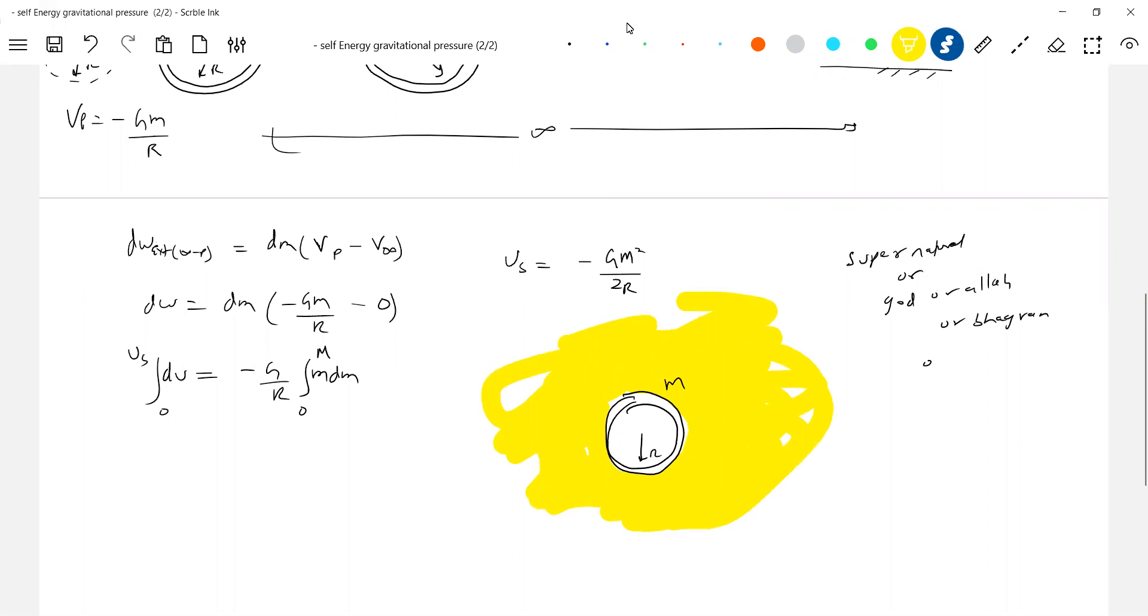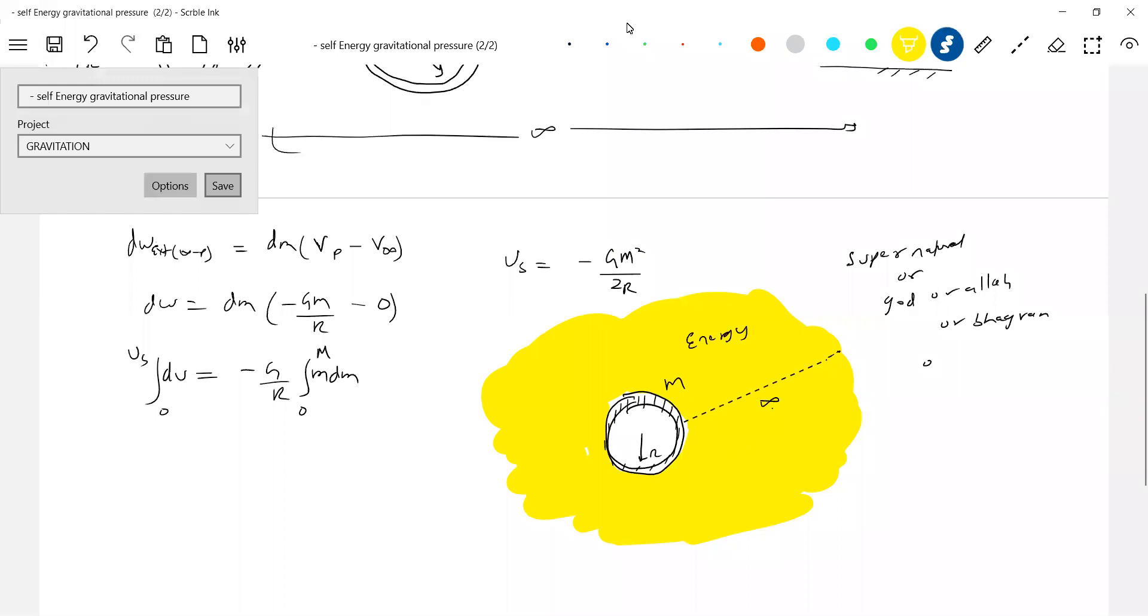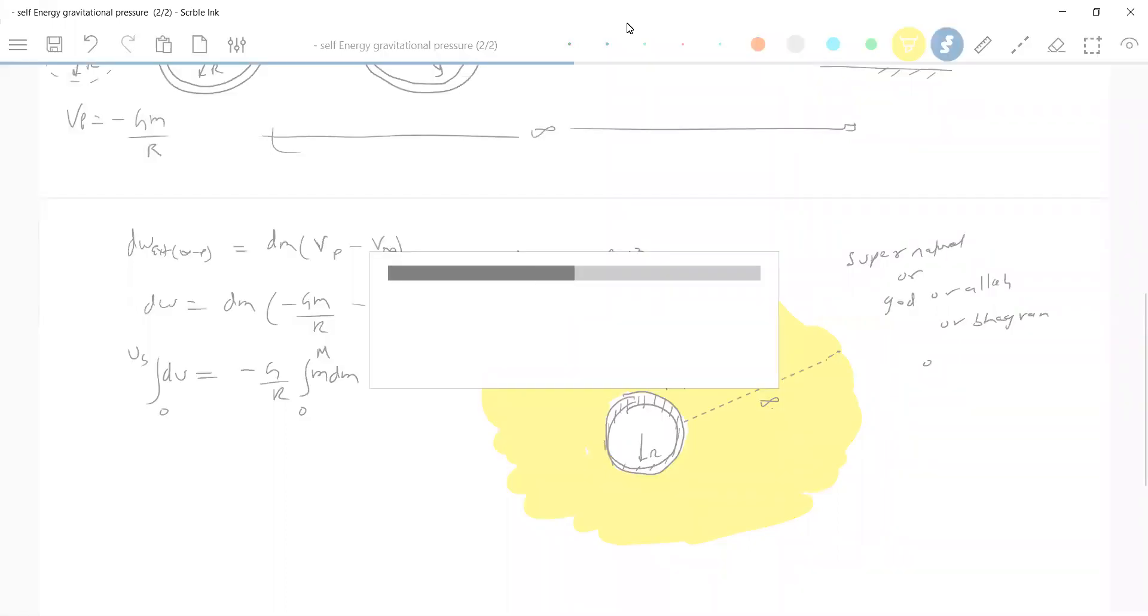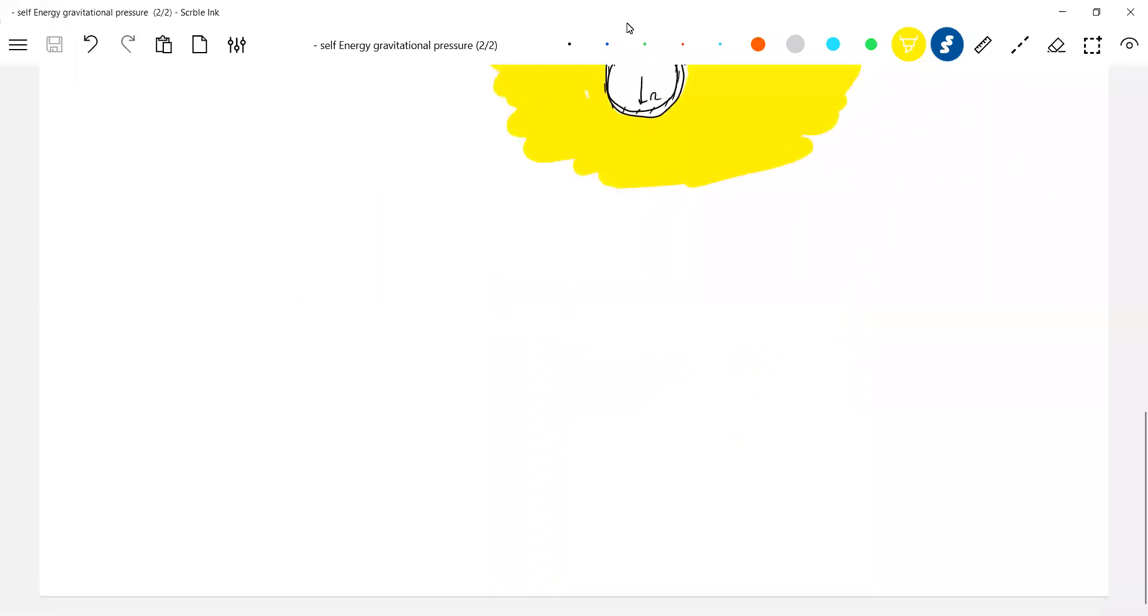And till where it will be present? It will be present till infinity. I think in the notebook or on the diagram, I cannot show infinity, so I'll put dotted like this. Till infinity. But inside the shell it will not be there because the field strength inside the shell is zero. And that is mass M. Now this idea, now we have to utilize to construct a solid sphere.